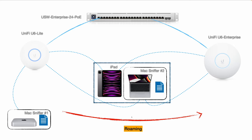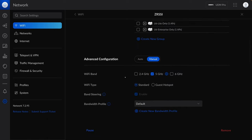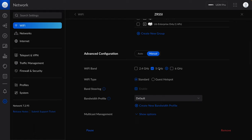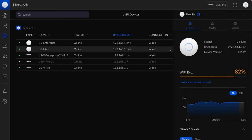In my lab environment I'm going to use a UniFi switch connected to two UniFi access points, and use an iPad as the mobile device. To capture wireless packets I'm going to use another Mac to run the sniffer. I originally planned to use one sniffer close to the first AP, but when the mobile device moves far away, many packets would be lost. So I added a second sniffer that I'll move together with the mobile device. In the UniFi Network Controller I created an SSID involving both access points, and in the Wi-Fi band I selected 5 GHz only to simplify the packet capture.